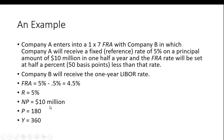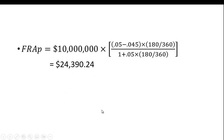Plugging the numbers in — notional principal of ten million dollars, 180 days, and the 360-day year convention — the payment that the borrower receives, because the fixed rate is lower than the reference rate, is $24,390.24 on a ten million dollar notional principal. Forward rate agreements are a way for a borrower to lock in a fixed rate if they think rates are going up, and they are very useful for dealing with interest rate uncertainty.